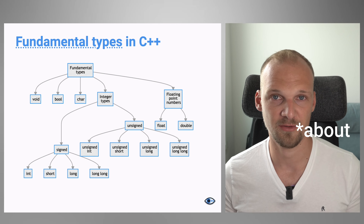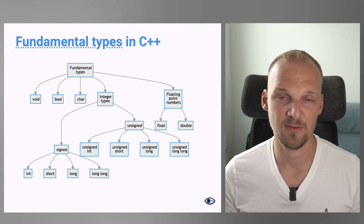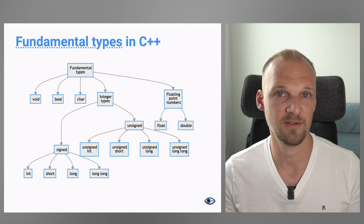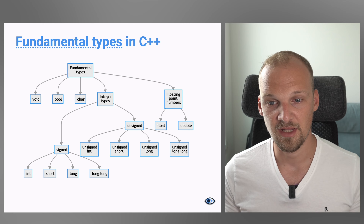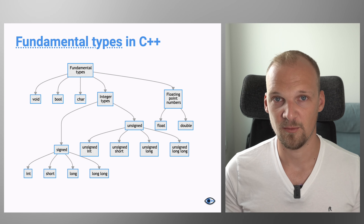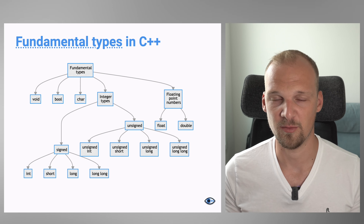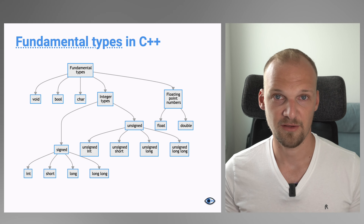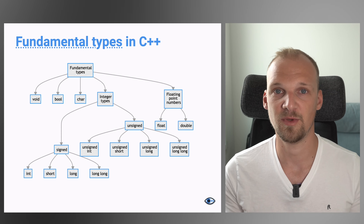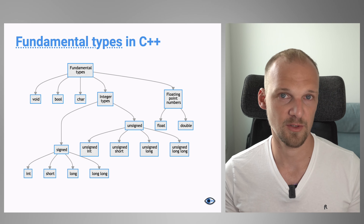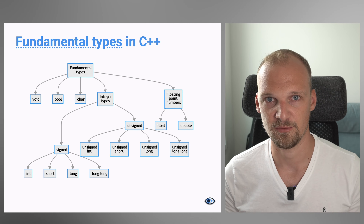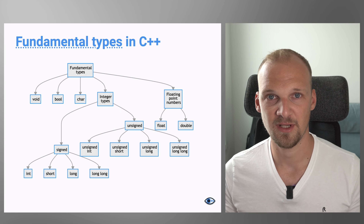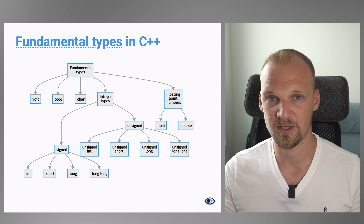The Boolean type uses the keyword bool and represents true or false statements. Next are character types, represented by char. They represent individual characters — for example, the letter H or a carriage return symbol — and can also be used to represent raw data, which we'll cover later in the course when we discuss raw memory.